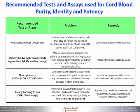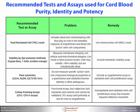Viability measured by dye exclusion measures membrane integrity but not cellular and mitochondrial integrity. This can result in false positives — cells may exhibit greater than 90% viability by dye exclusion methods but are metabolically dead. A remedy for this would be to include a metabolic viability assay.